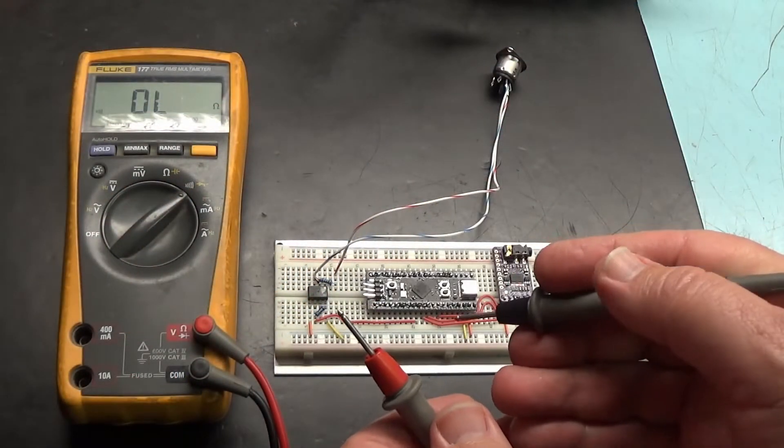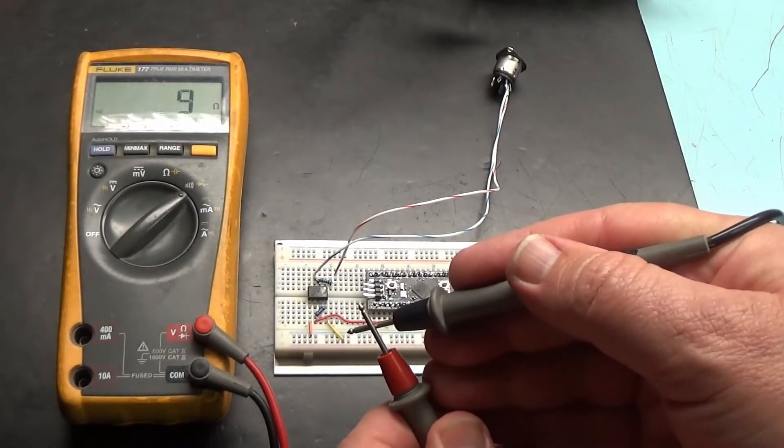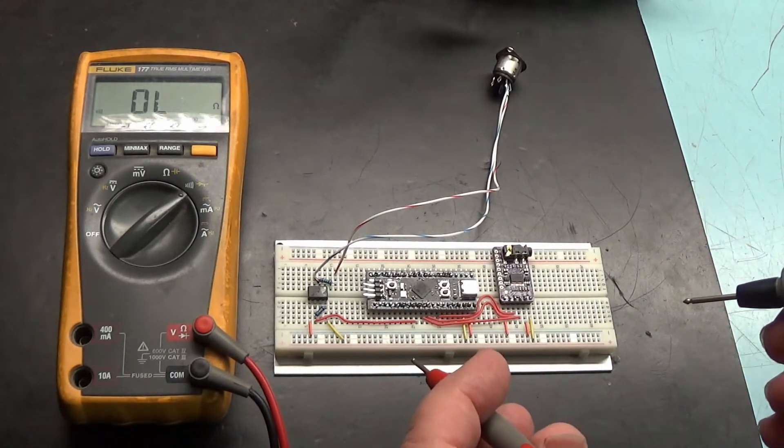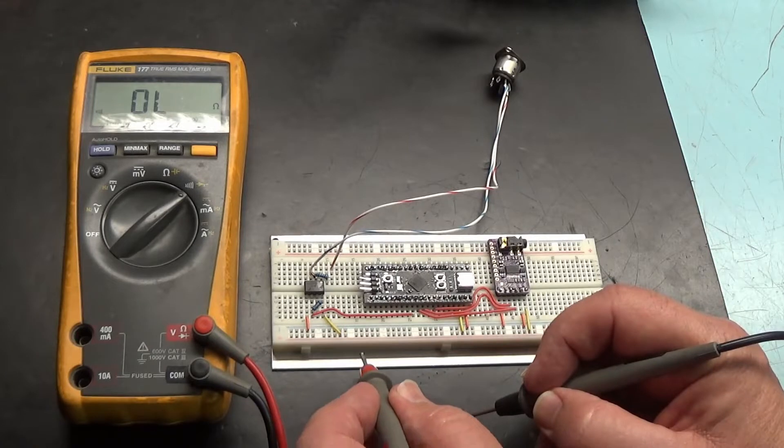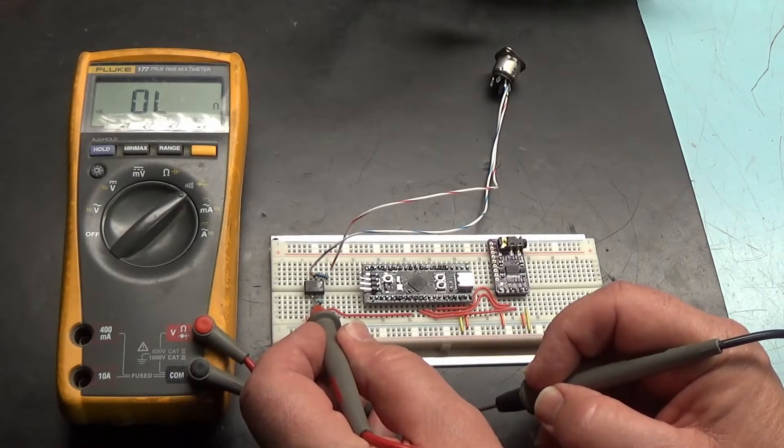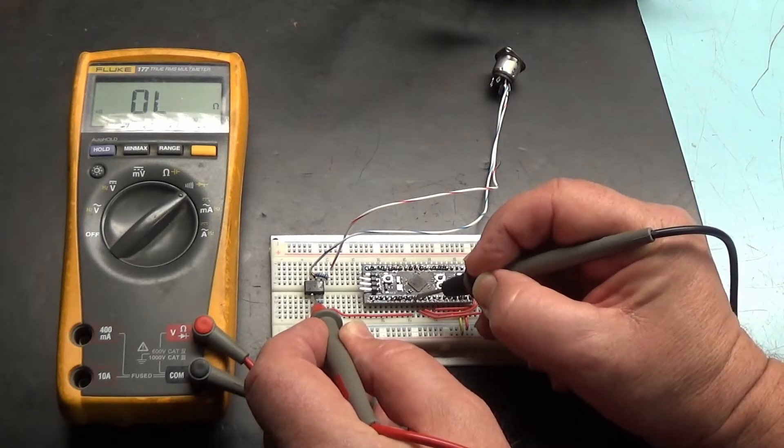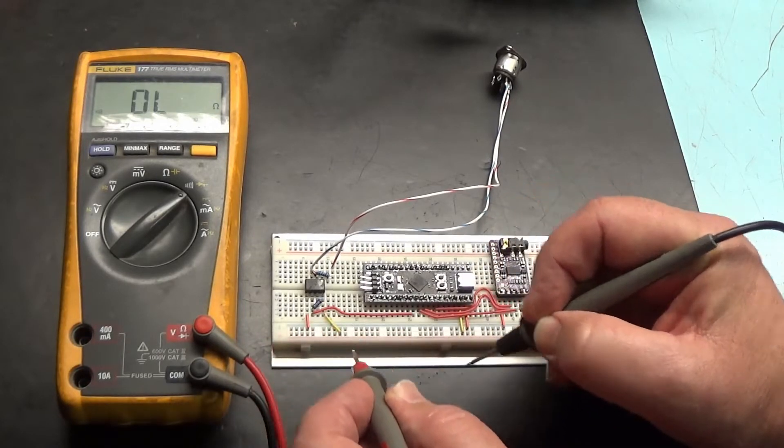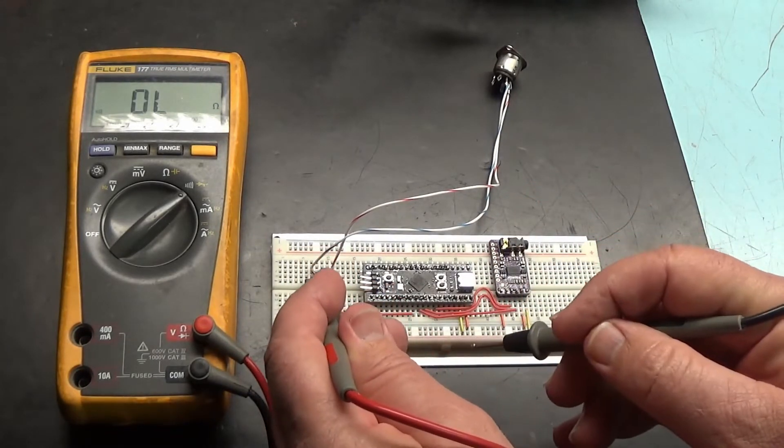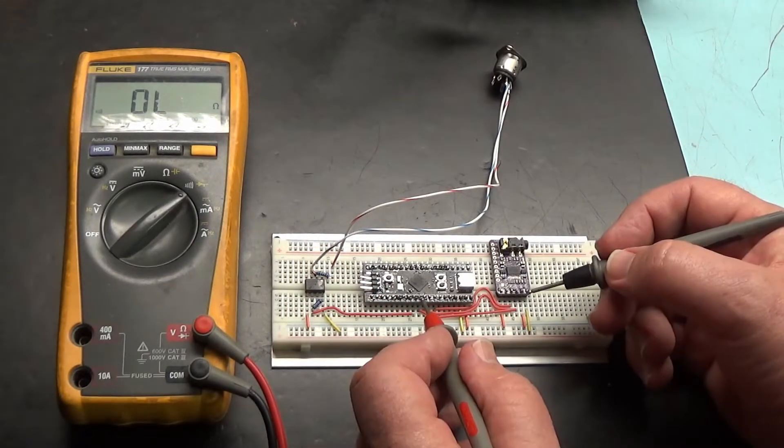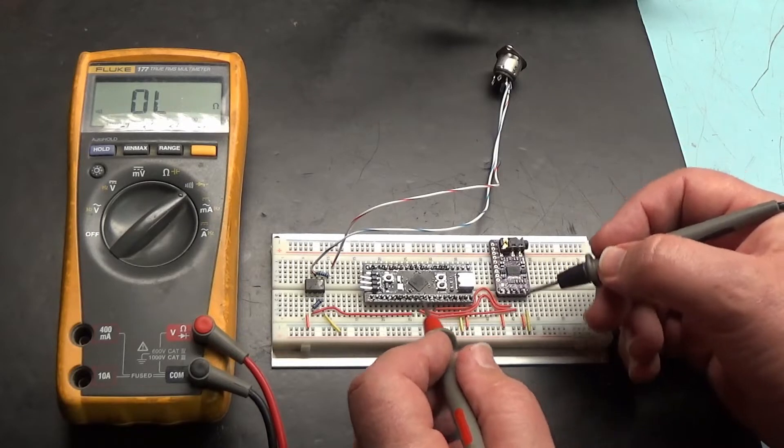Using the multimeter continuity tester I can test for the most basic connections. For example I'm going to test pin 6 on the MIDI interface IC to A3 on the black pill board and the beep confirms that we do have continuity from that pin to this pin. We can do the same from pin to pin on these two boards.